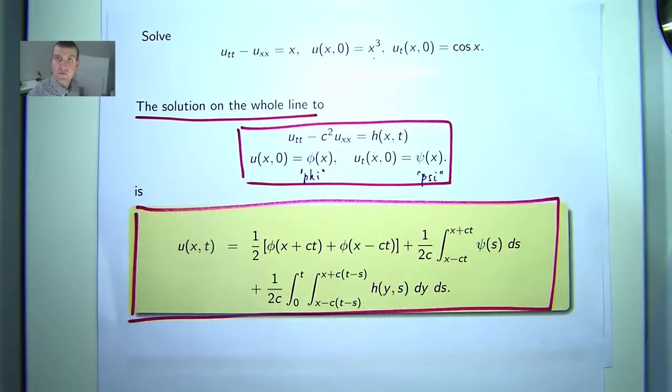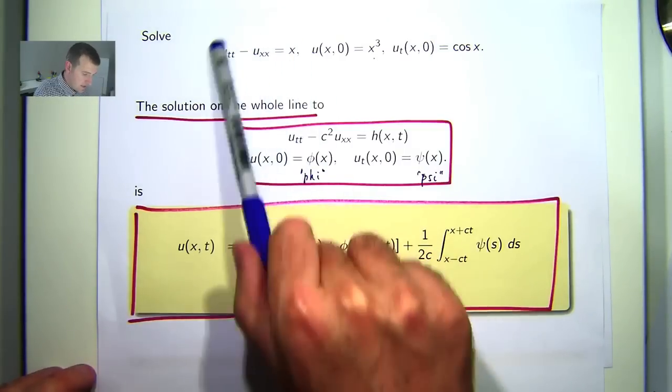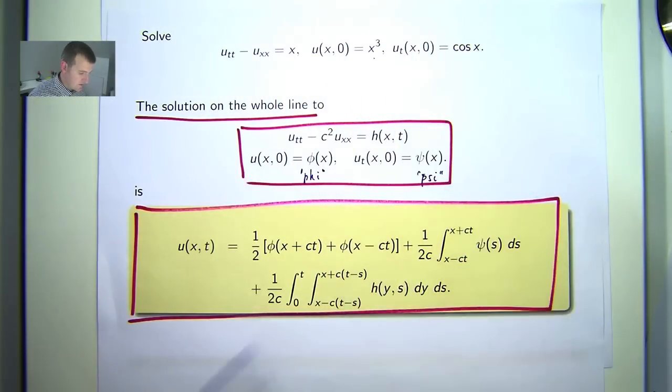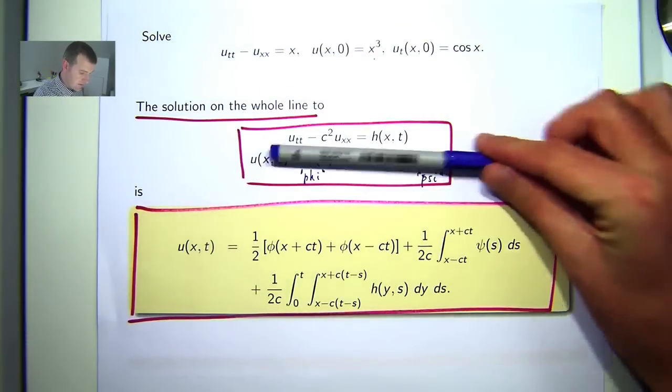Okay, we're asked to solve the following problem. This wave equation, subject to this initial position and this initial velocity. So let's just compare this with this more general form.